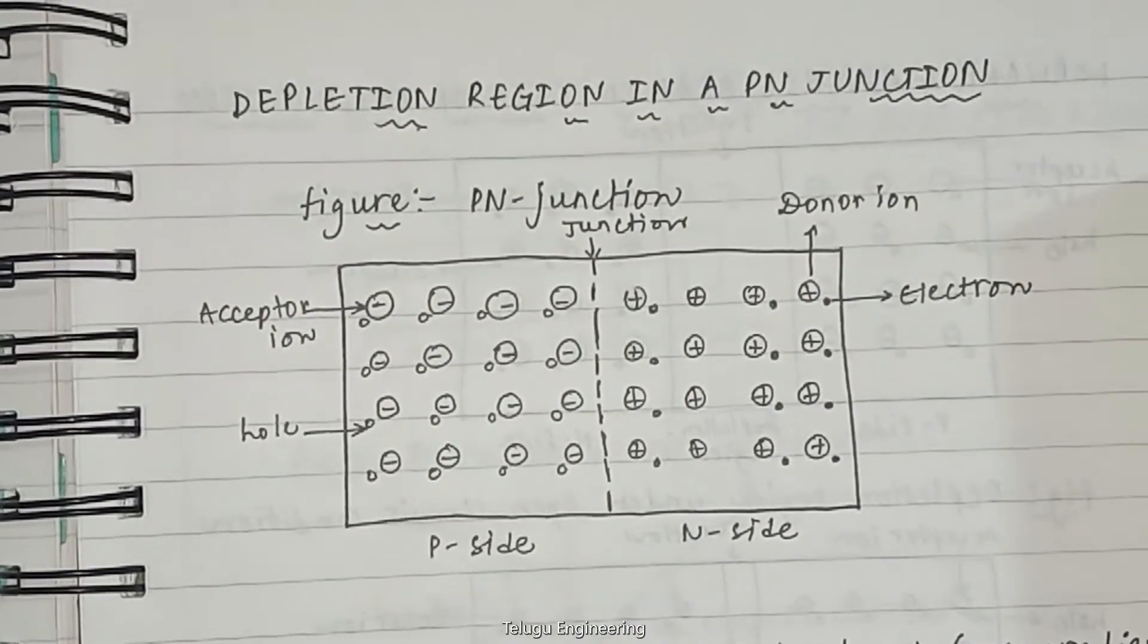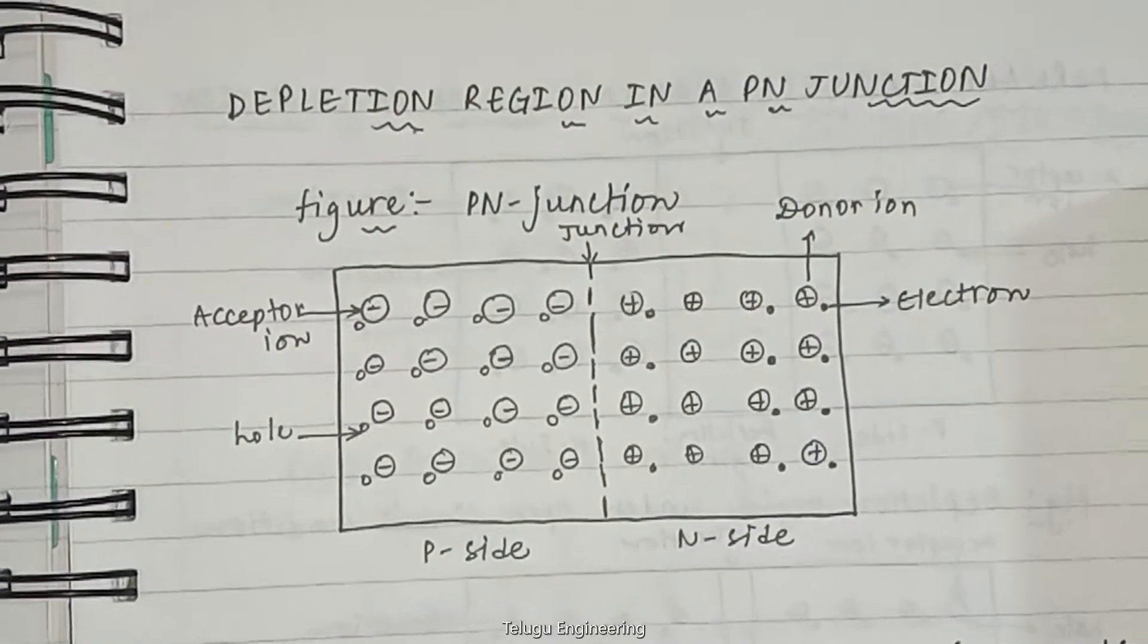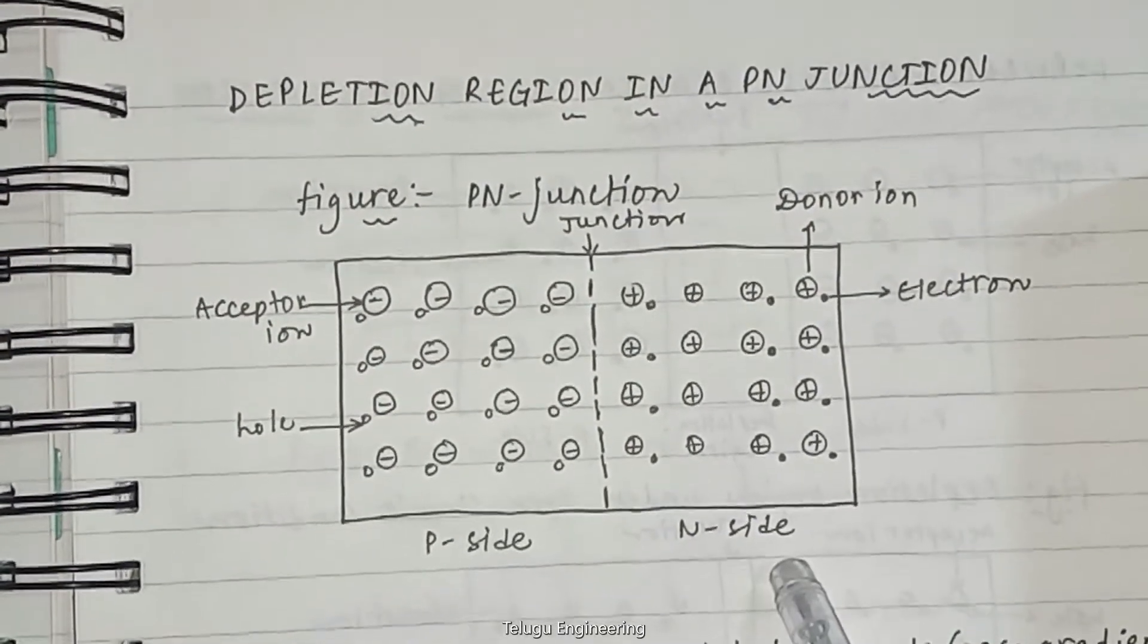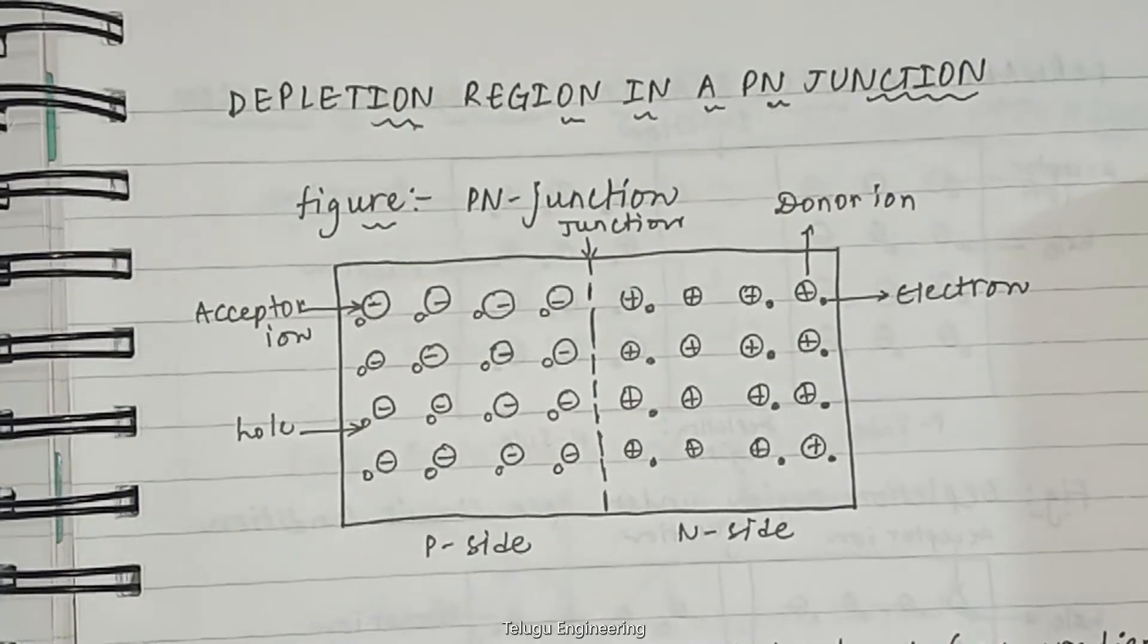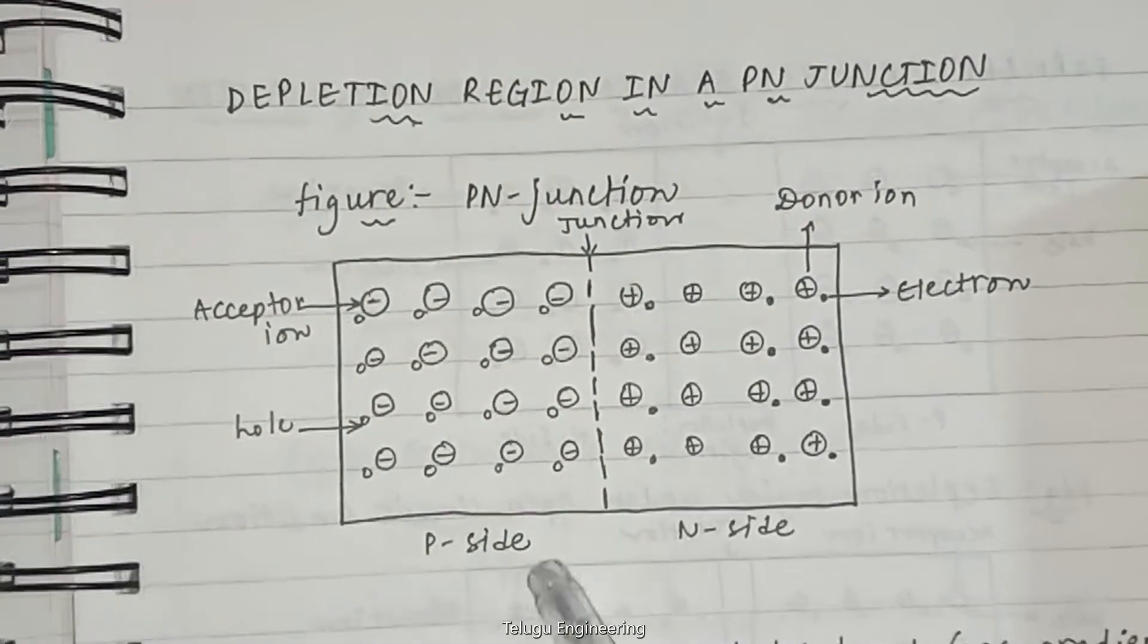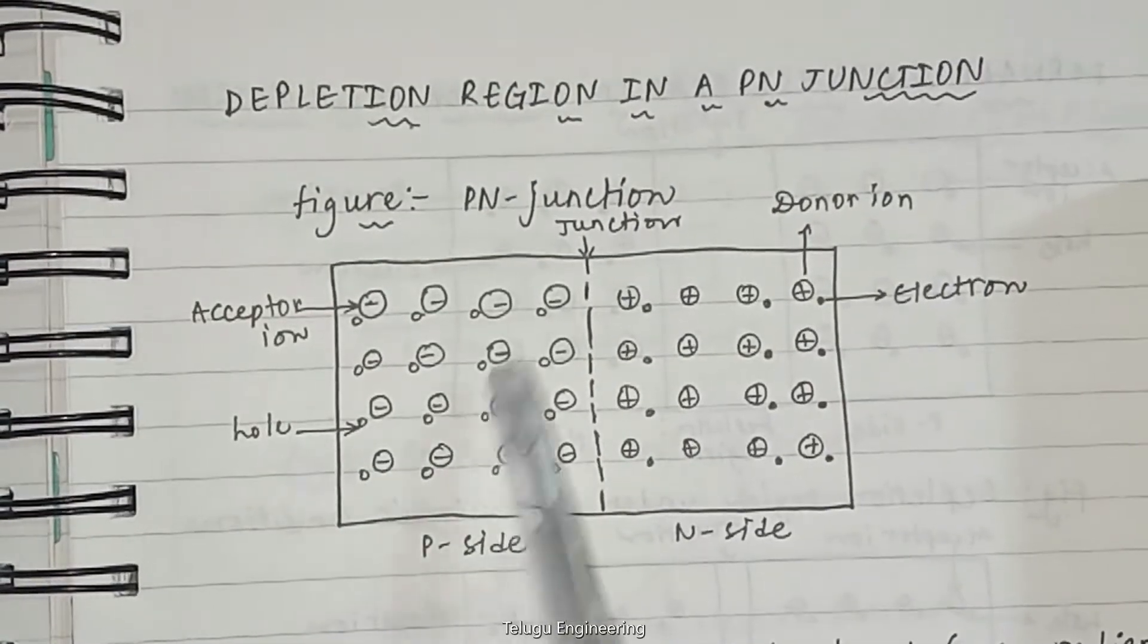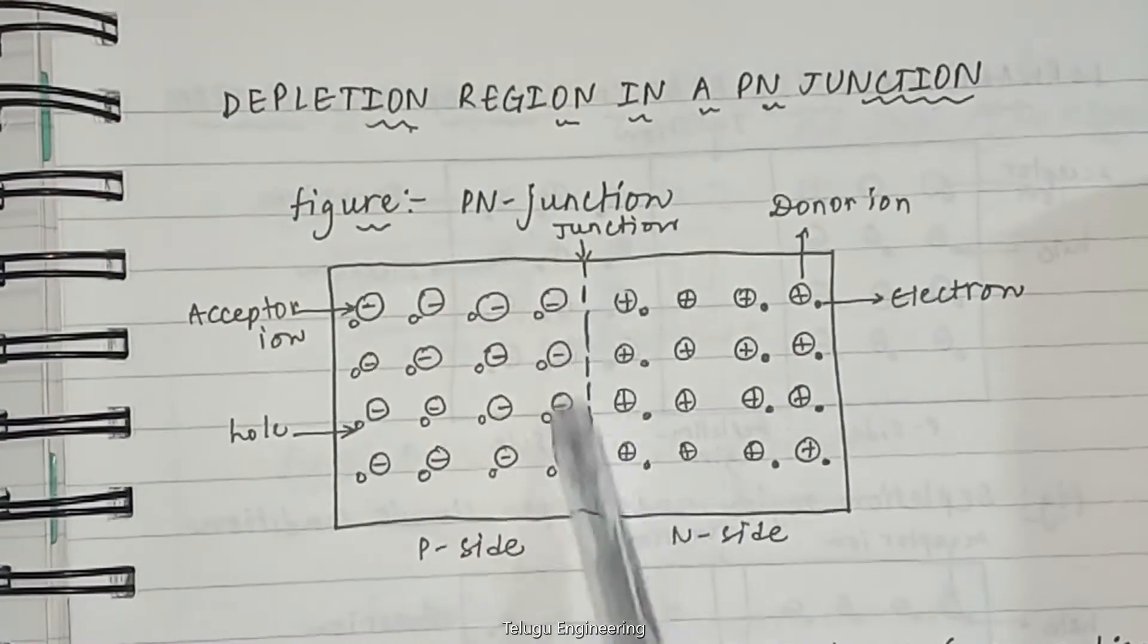A P-N junction is formed by doping a single crystal silicon semiconductor with P and N type impurities as shown in this figure. One side of the semiconductor is doped with P type impurities and the other side is doped with N type impurities. The meeting point of P and N type regions is known as the junction.